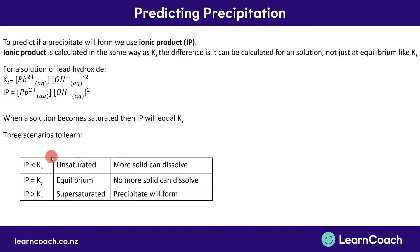There are three main scenarios to learn. When IP is less than Ks, the amount of stuff added is less than the amount needed to saturate the solution, so the solution is unsaturated — if you were to add more solid, some would dissolve. When IP equals Ks, the solution is saturated or at equilibrium, meaning it's completely full of that pair of ions, but there is no solid floating in the solution.